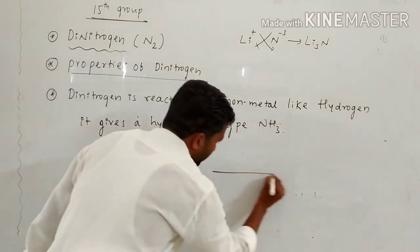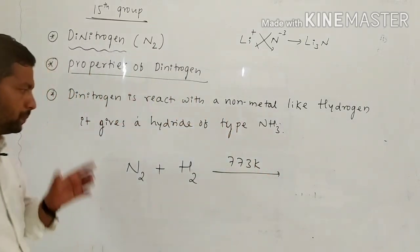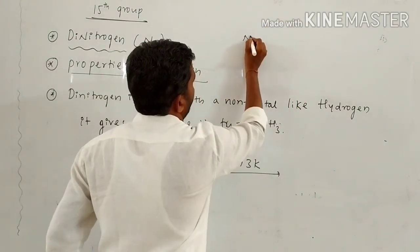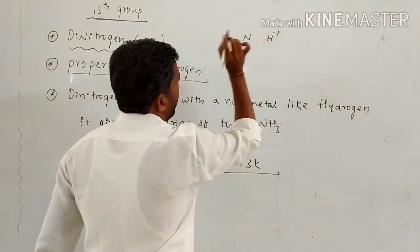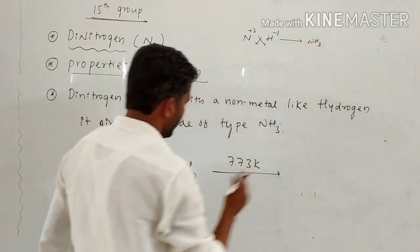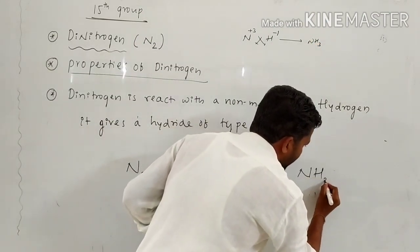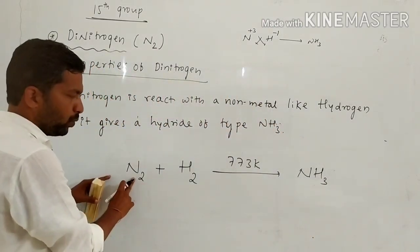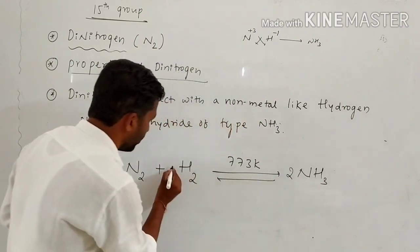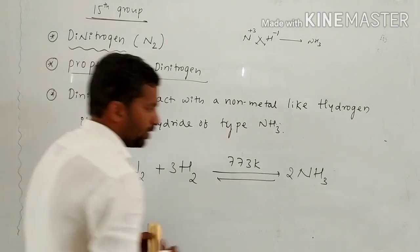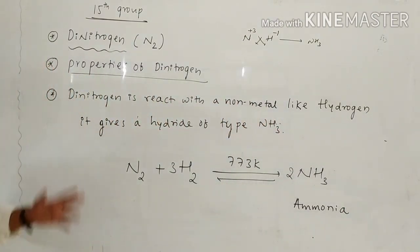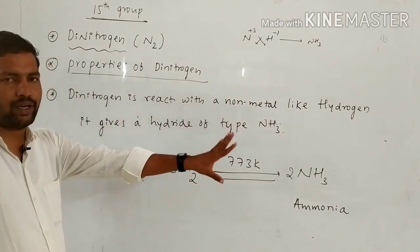Di-nitrogen reacts with non-metals like hydrogen at 773 Kelvin temperature. Hydrogen goes to oxidation state minus 1, nitrogen goes to plus 3. The balanced equation is: N2 + 3H2 → 2NH3. This reaction forms ammonia. This is the third property of di-nitrogen.